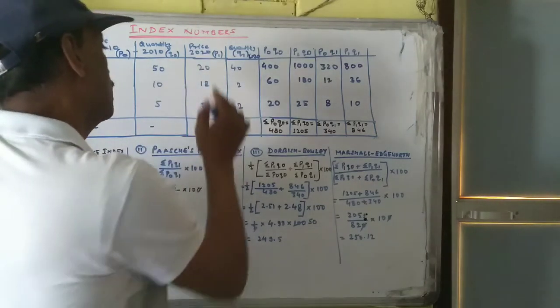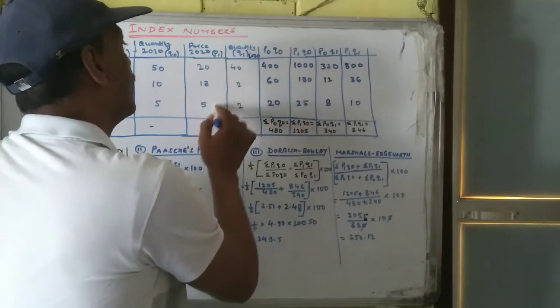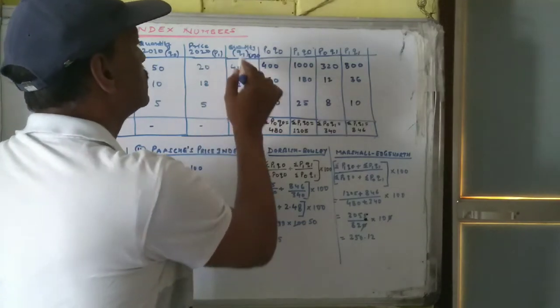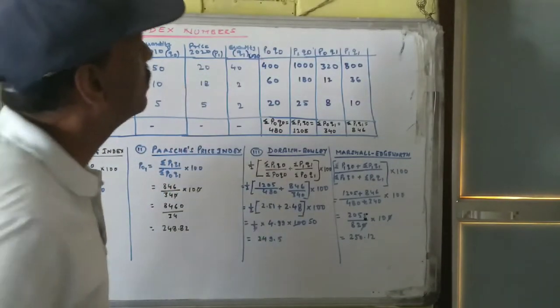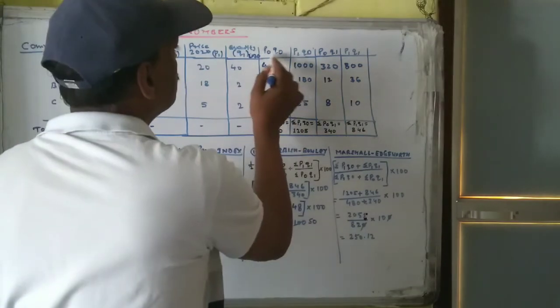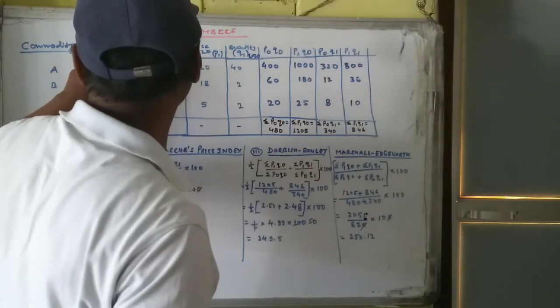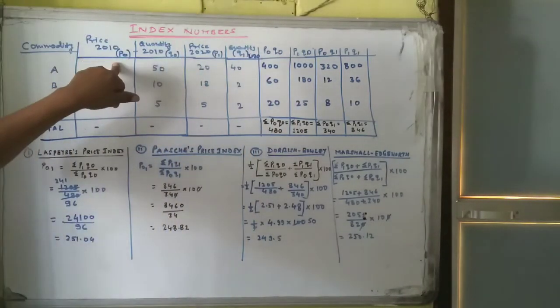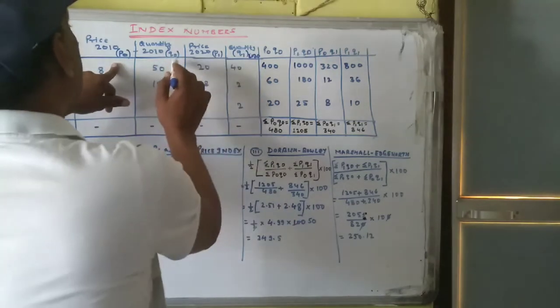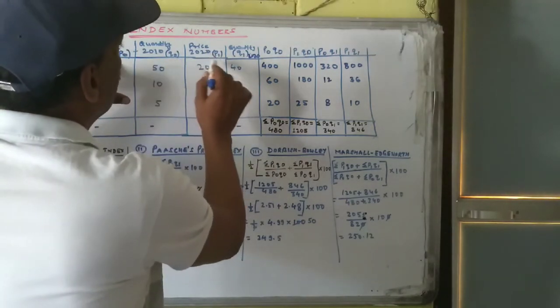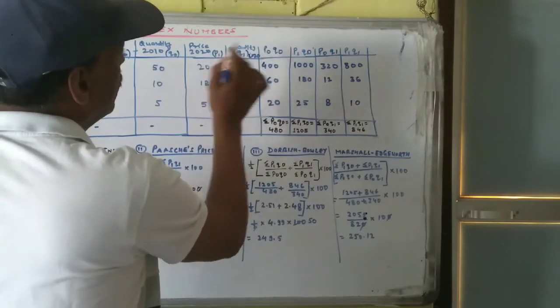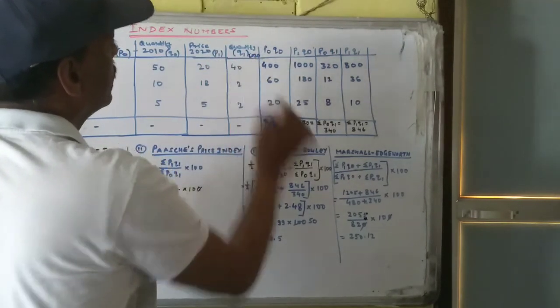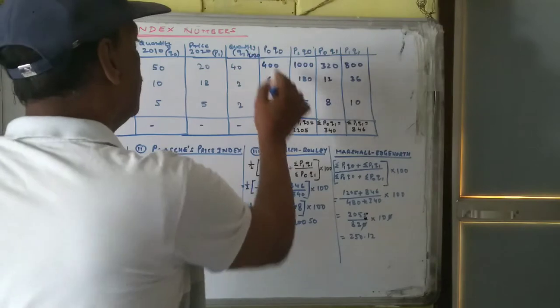So here, just see commodities A, B, C. Price of base year is 8, 6, 4. Quantity is 50, 10, and 5. Price of current year is 20, 18, 5. Quantity of current year is 40, 2, and 2. Now the conversion calculation: P0 is price of base year, Q0 is quantity of base year. P1 is price of current year and Q1 is quantity of current year.